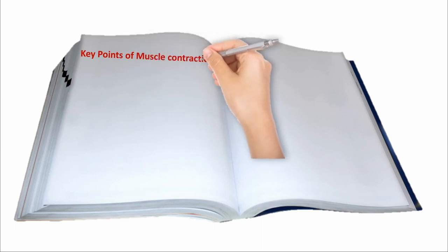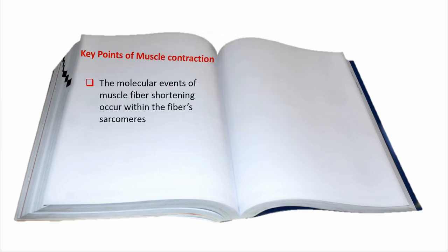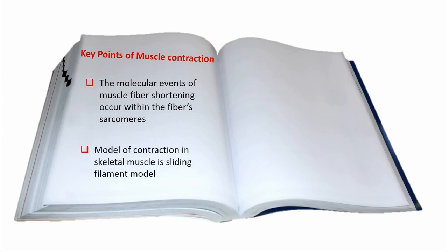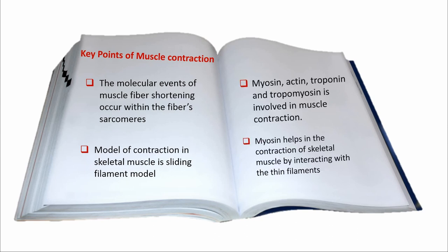Key points of muscle contraction. The molecular events of muscle fiber shortening occur within the fiber sarcomeres. The model of contraction in skeletal muscle is the sliding filament model. Myosin, actin, troponin and tropomyosin are involved in muscle contraction. Myosin helps in the contraction of skeletal muscle by interacting with the thin filaments.